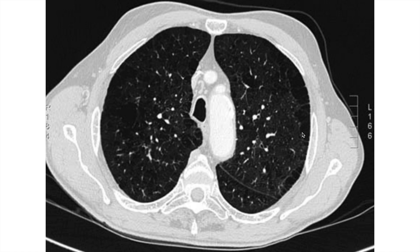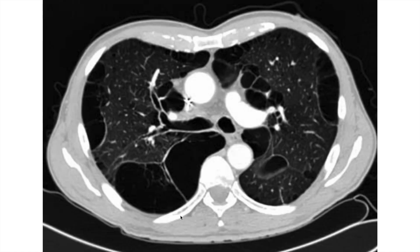This is paraseptal emphysema, as you can see here. This is a single layer of subpleural lucency, predominantly seen below the pleura, and this is called paraseptal emphysema. This is bullous emphysema — here you can see large cavitary-type lesions, called bullous emphysema.